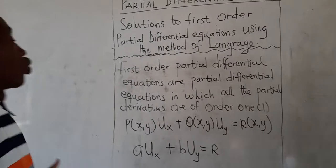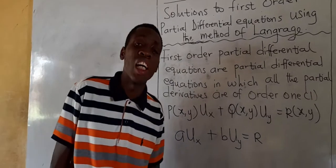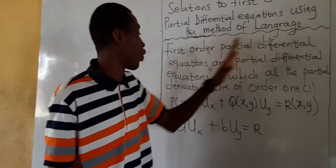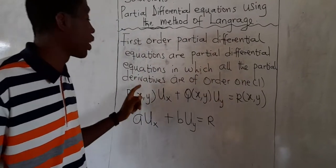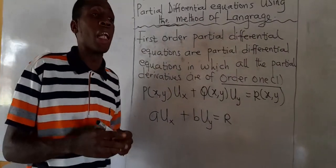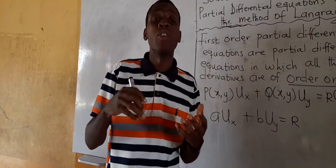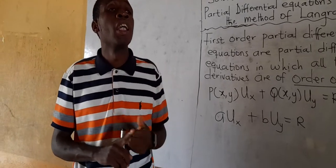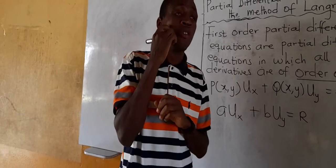First, we learn what first order partial differential equations are and the forms they take. We say first order partial differential equations are partial differential equations in which all the partial derivatives are of order 1. Remember, we classify partial differential equations in terms of order, degree, linearity, homogeneity, and also whether they have constant or variable coefficients.